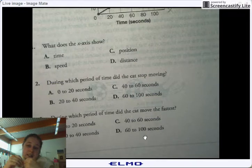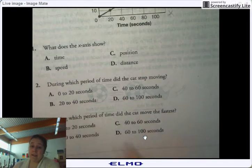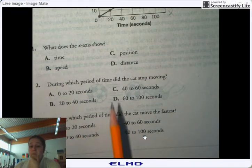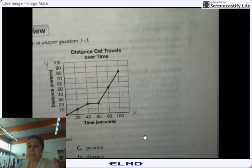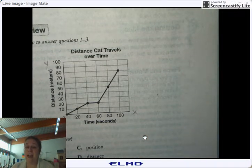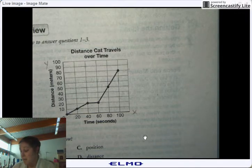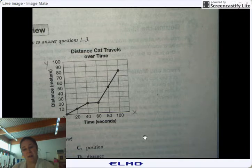During which period of time did the cat move faster? Faster. 0 to 20, 20 to 40, 40 to 60, or 60 to 100. Now remember, faster means it's going to have a what type of incline? Yeah, a steeper incline. So think about which time frame has the steepest incline.